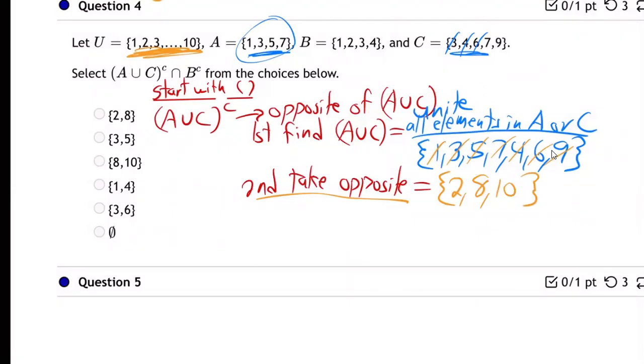All right. So we've done the first part of the question. The hardest part, for sure. So now let's go on to finish the problem. So now we want A union C complement, back to the original question here, overlap with B complement.